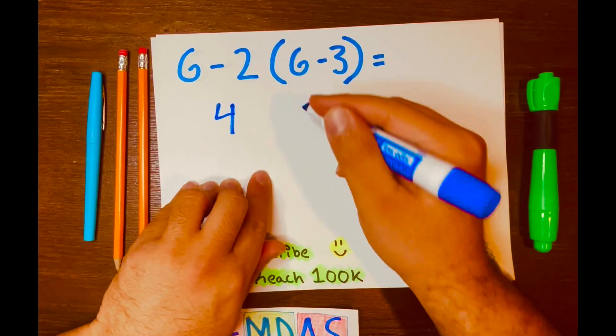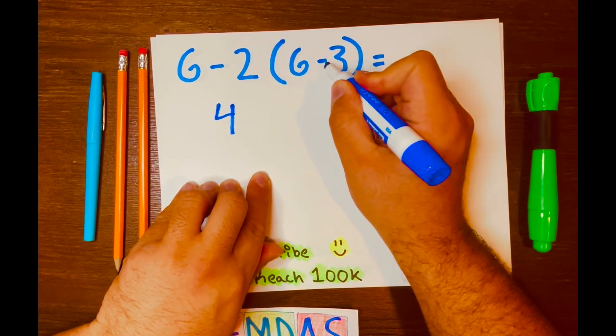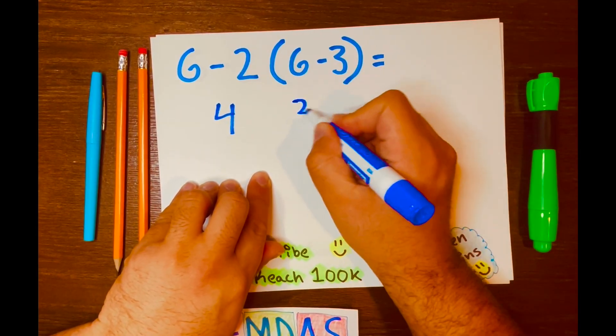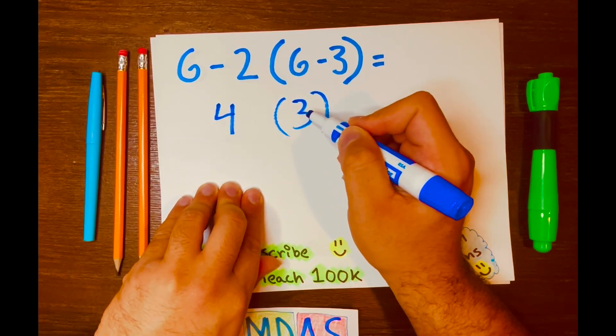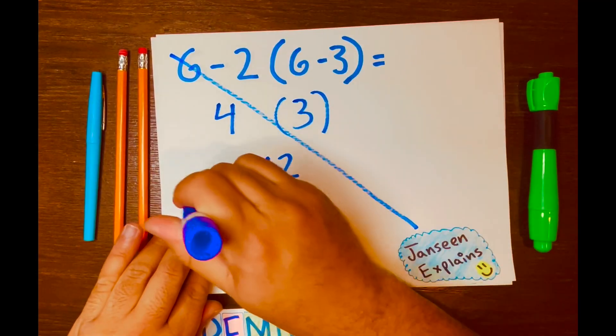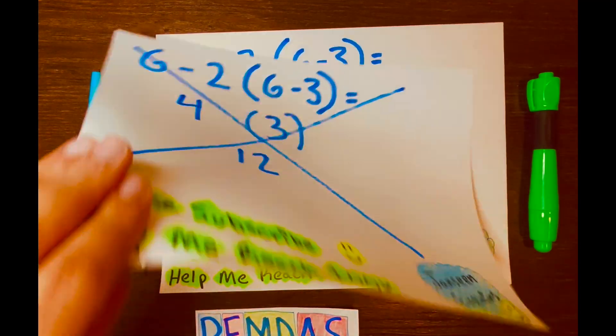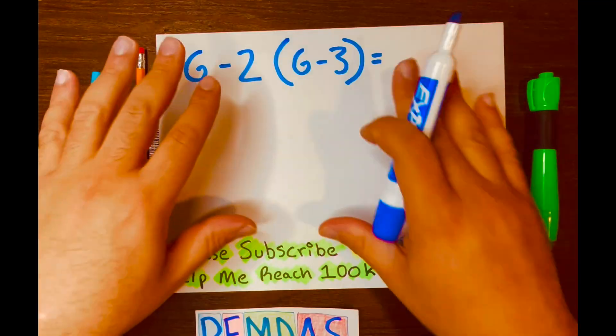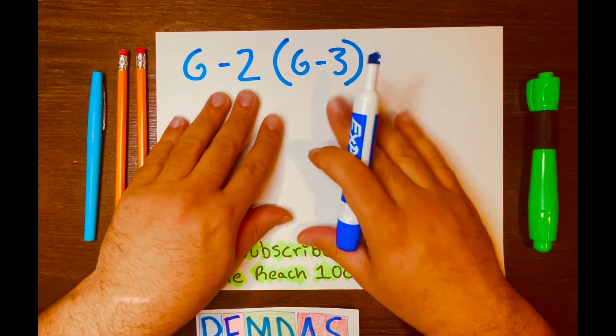And then they'll subtract 6 minus 3, which is 3. And then 4 times 3 is 12. And this is so wrong. Let me show you how to do this correctly and get the right answer.